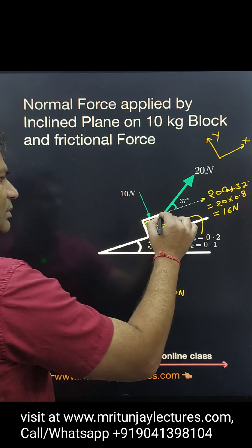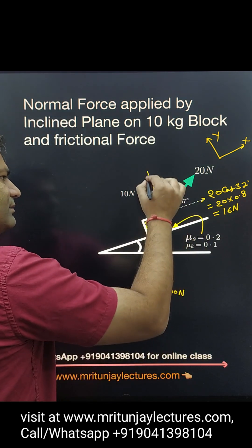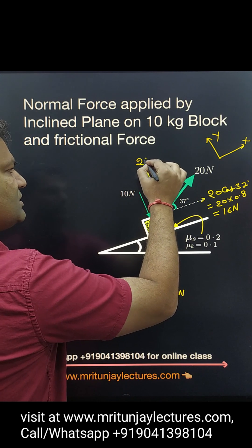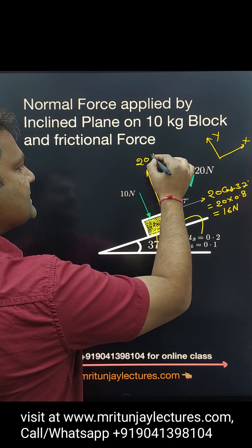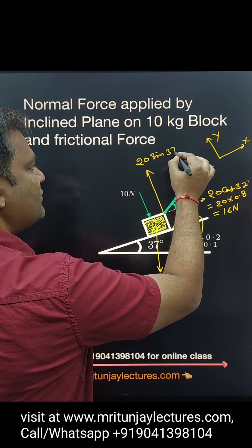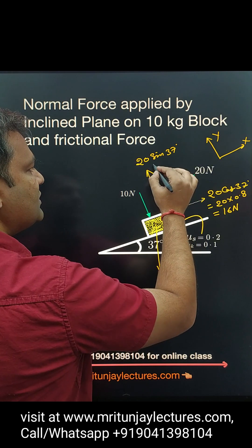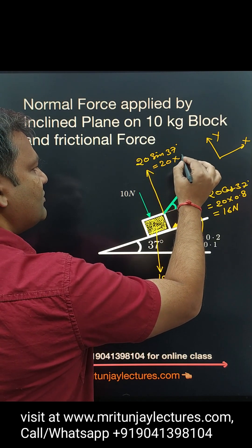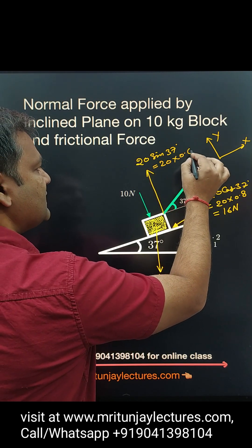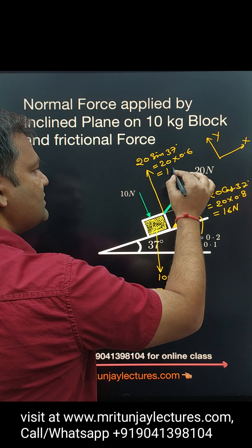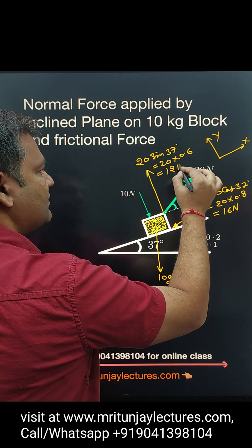And the normal component of 20 Newton is 20 sin 37. Sin 37 is 0.6, so 20 into 0.6 — that is 12 Newton.